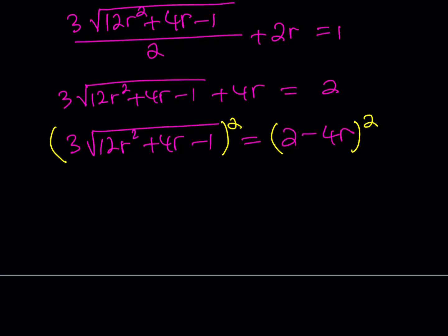So when we square this, this is a product. So it's going to be 9 times 12R squared plus 4R minus 1. And then the right-hand side is going to be A minus B squared, which is A squared minus 2AB plus B squared, which is 4 minus 16R plus 16R squared.